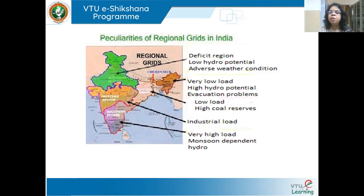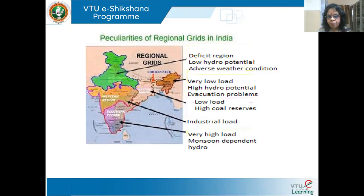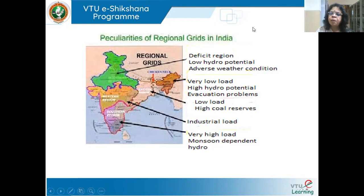As grids grow bigger, control becomes more complex. Reliability does improve because the whole concept of building larger grids is to facilitate power transfer from one region to another. Today, the whole of India is one national grid, which essentially means that if a blackout occurs, it could extend from Kashmir to Kanyakumari. The case studies I'm going to present will show how blackouts can start from very simple incidents.